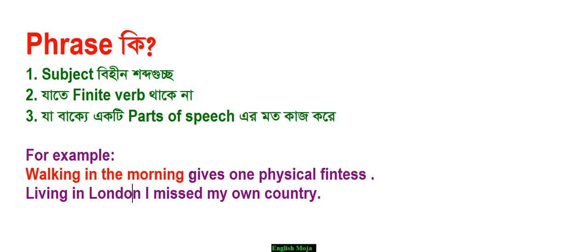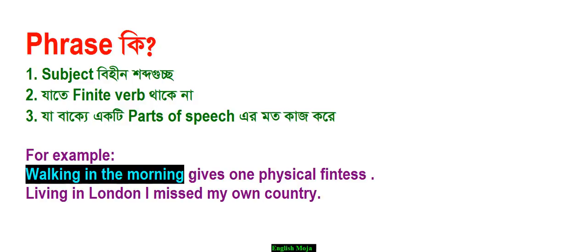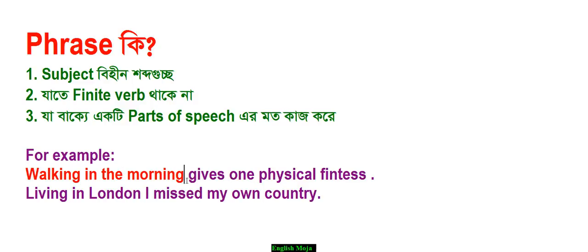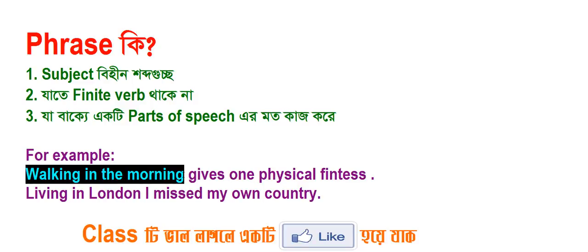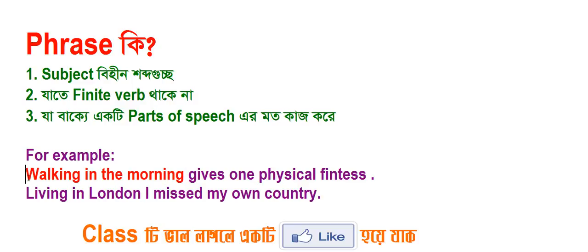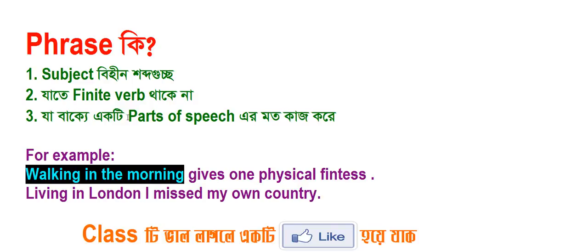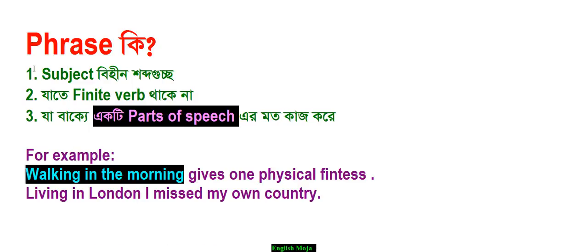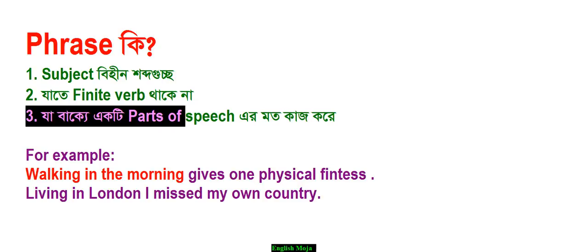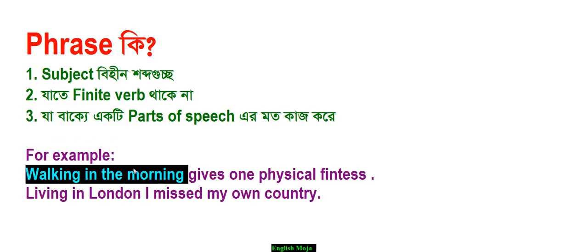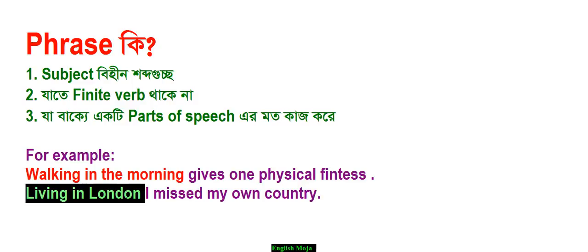The first part of the verb is the first part of the verb. Working in the morning is the subject. This verb is the subject. The first part of the verb is the noun — the first part is the noun. The noun is the verb. I missed my own country living in London — it's an adverbial phrase. Living in London — it's not subject or finite verb, it's an adverbial phrase.